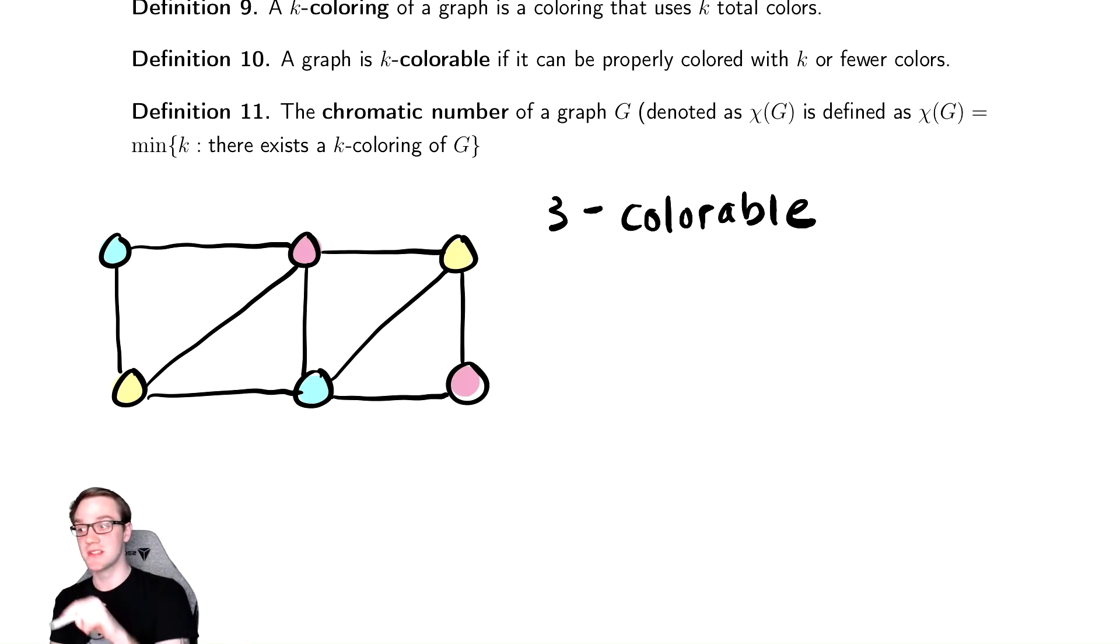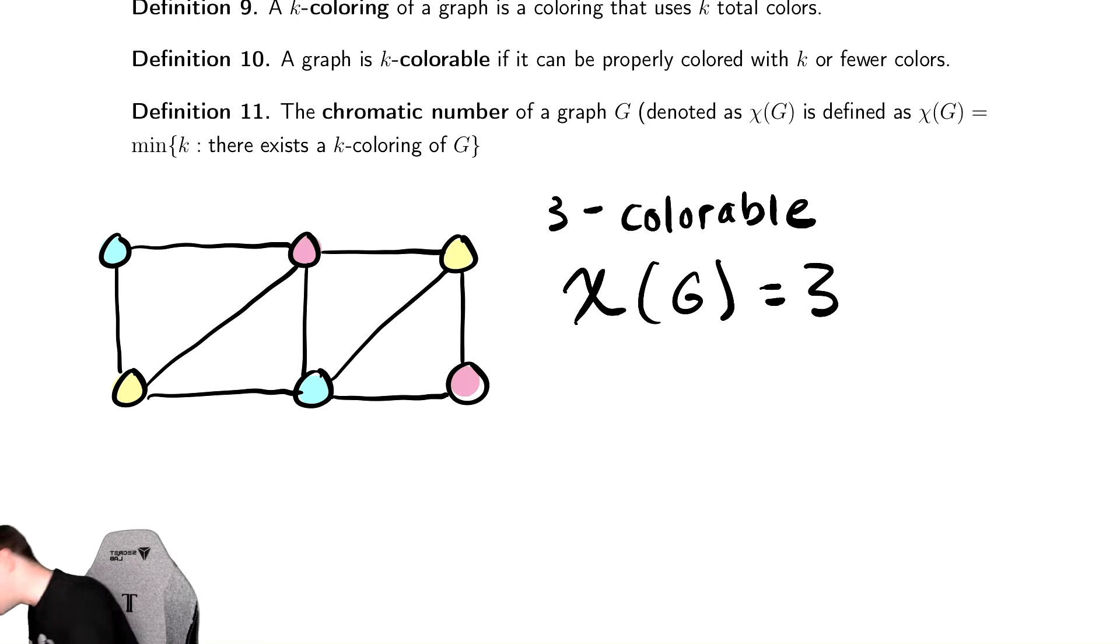But if you have a bunch of vertices that are all connected to each other, then you need to have at least that many colors. So that's one thing that we have. So this is three colorable, and it turns out that the chromatic number, chi, of this graph is three. You can't possibly do it in two. You need at least three colors.